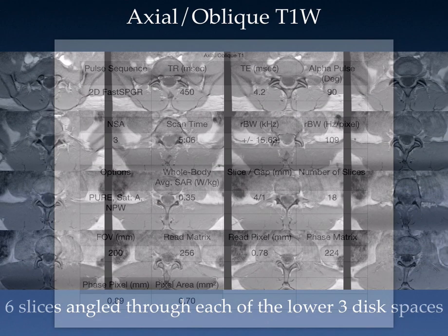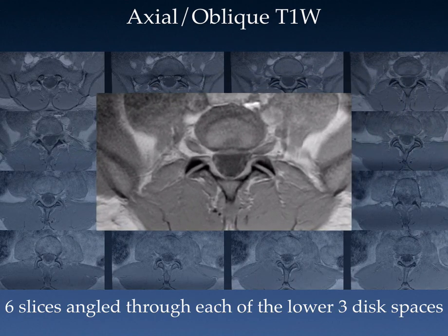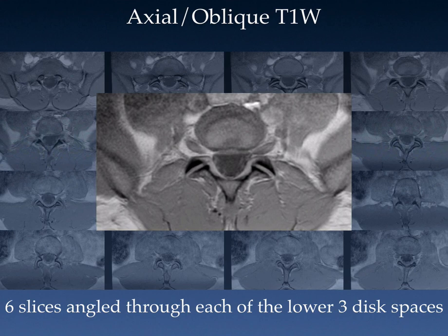Here are some sample images. We did three sets of six slices angled through each of the lower three disc spaces. As you can see, we've got good contrast. You can see the nerve roots quite well within the thecal sac, good contrast between the posterior intervertebral disc and the CSF, and out into the nerve roots. Facet joints are nicely seen, and the ligamentum flavum is nicely seen — really good quality contrast with quite adequate spatial resolution, all at low SAR values.